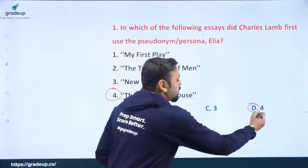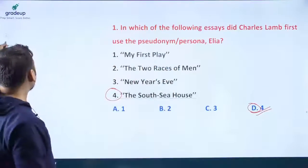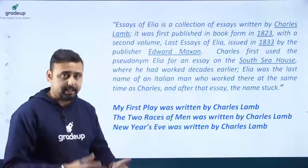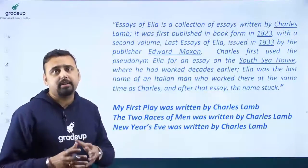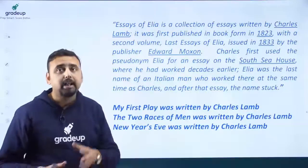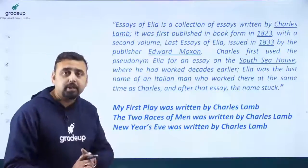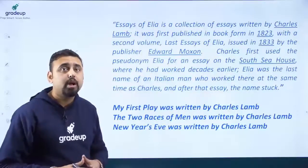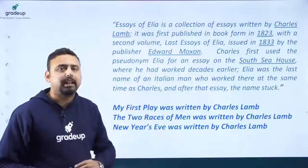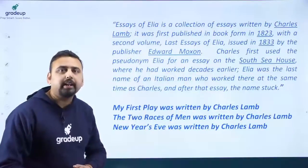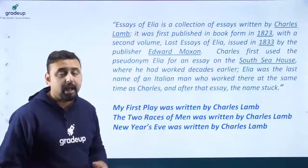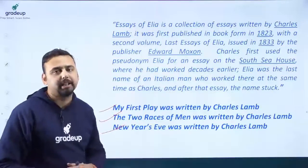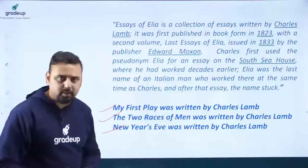Essays of Elia is a collection of essays written by Charles Lamb, first published in book form in 1823, with the second volume, Last Essays of Elia, issued in 1833 by publisher Edward Moxon. Charles first used the pseudonym 'Elia' for an essay on the South Sea House where he had worked decades earlier. Elia was the last name of an Italian man who worked there at the same time. By the way, 'My First Play,' 'The Two Races of Men,' and 'New Year's Eve' were also composed by Charles Lamb.